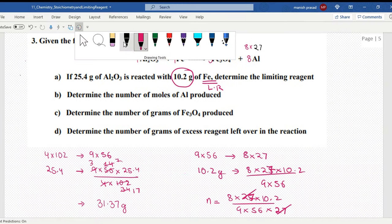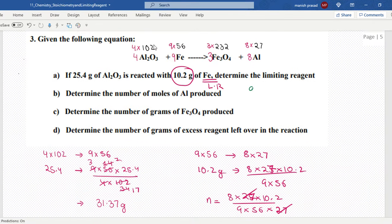Third part is also similar. Again we go to the limiting reagent. 9 into 56 gives us 3 into 232, so 10.2 grams would give us 10.2 into 3 into 232 divided by 9 into 56. This would give us the answer for how much iron oxide is produced.